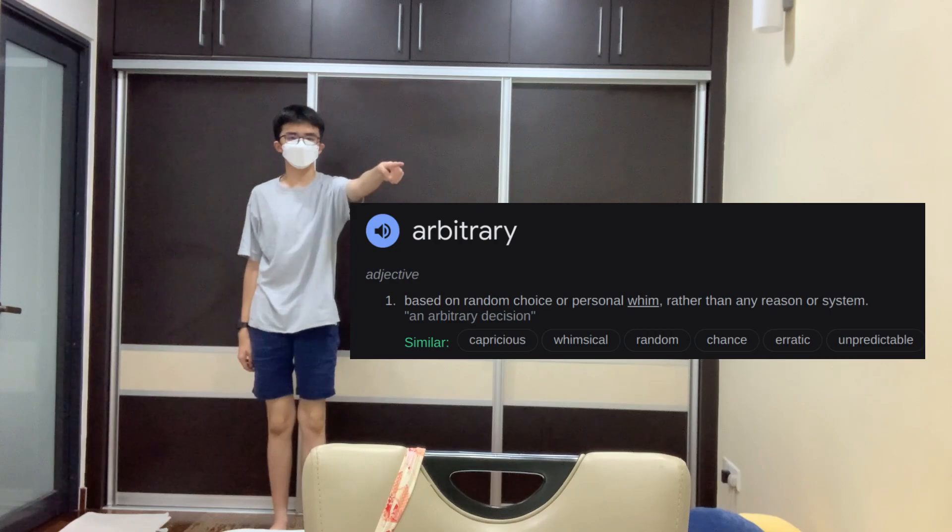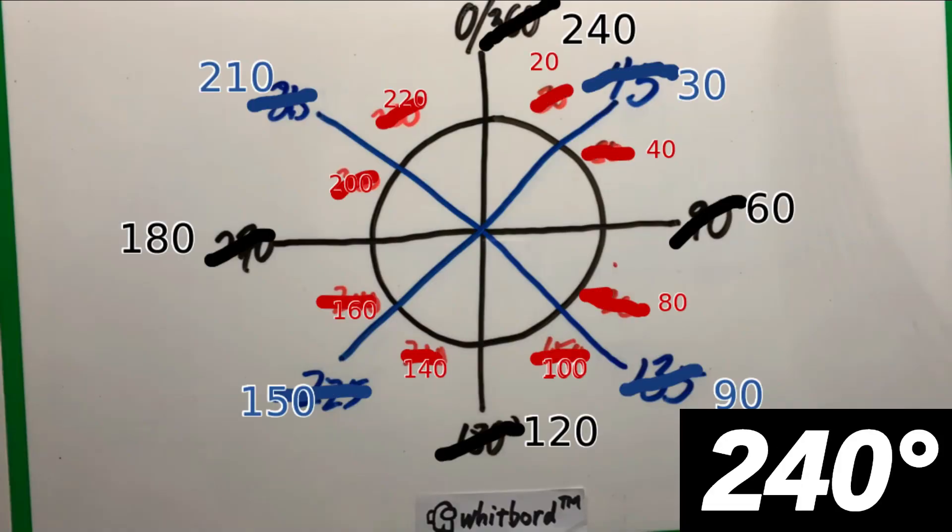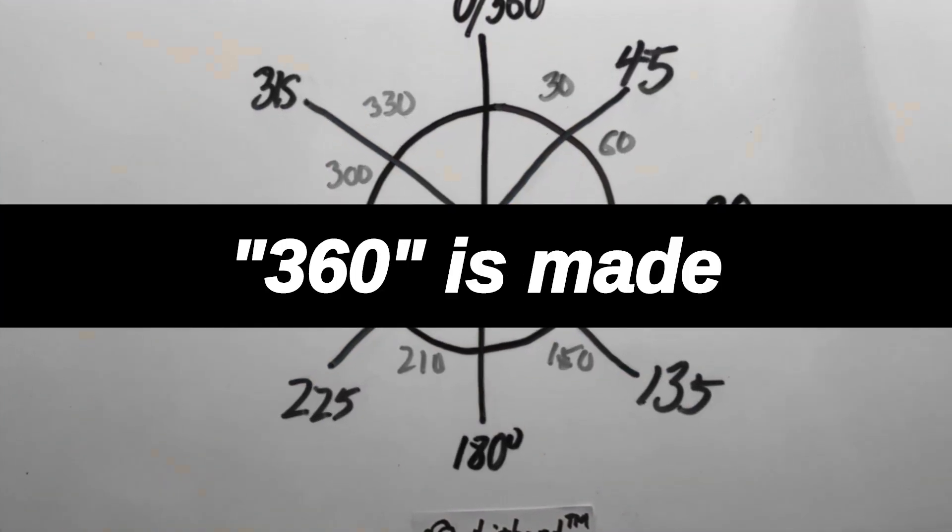But it's so common, you don't realize how arbitrary it is. By that, I mean we could have just started off with some other number instead of 360 and it would still make sense. 360 is made up.